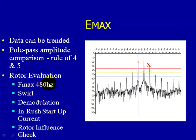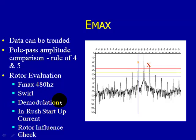We want to utilize every tool available in the E-MAX, going out to 480 hertz, which allows us to use our swirl or look at our fifth harmonic. The fifth harmonic is essentially a phase shift in the air gap flux on the rotor, which creates pole pass frequencies around the fifth harmonic that we monitor for. We also utilize demodulation, which filters out the 60 hertz signal, leaving behind mechanical anomalies in the demodulation spectrum. This can also be used for very accurate two-pole rotor bar analysis.